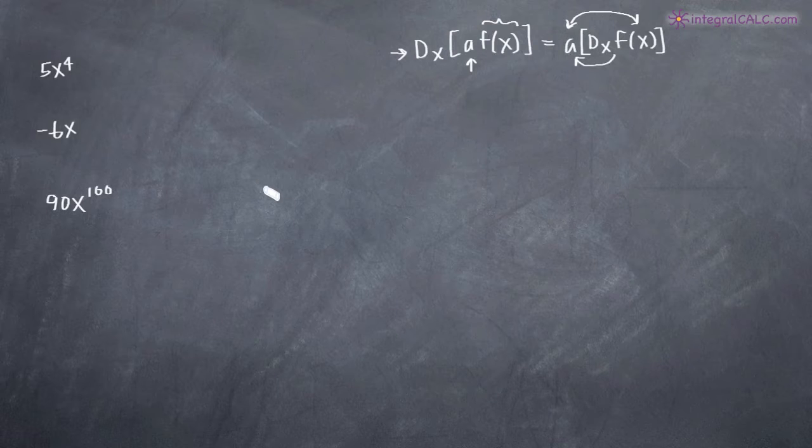So pretty easy, let's just look at a couple examples. We've got 5x^4. What it's saying here is that a is 5 because that's the constant real number that's the coefficient on this x^4 term. So we've got a and f(x) is this x^4 here.